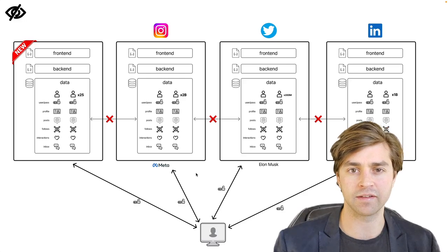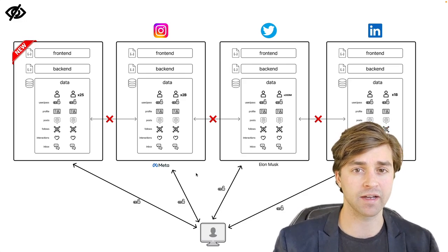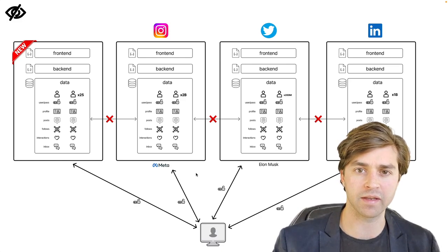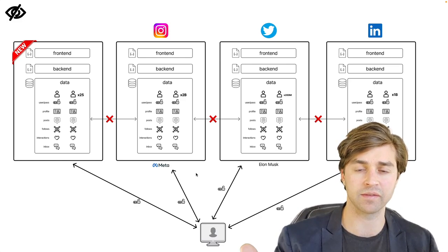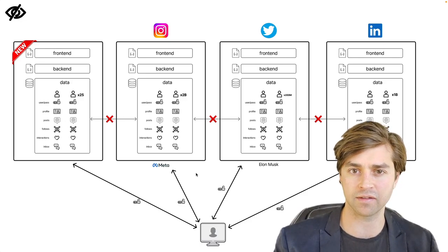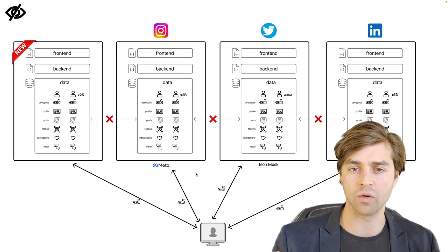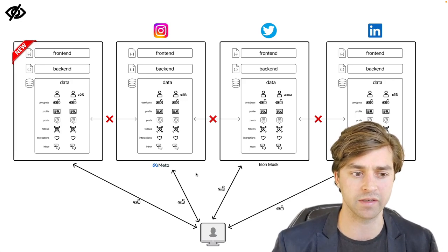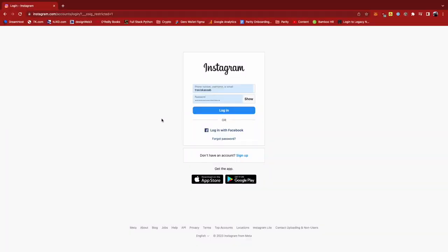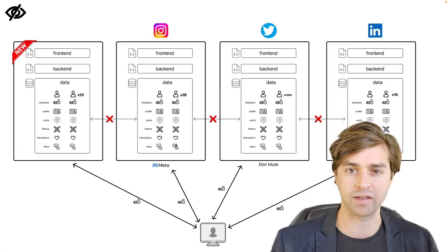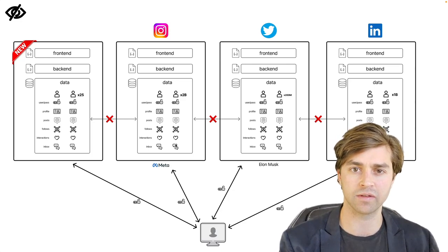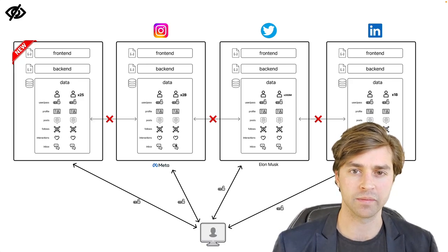The first problem with this is that it's a threat to free speech. At any time, Instagram can revoke my access to the application. Instagram can make it so that I can't access my Instagram account, I can't see all of the data that I've created or actually post on the social network itself, which is an infringement on free speech. This is because this is permissioned access to my account. I must log in with my username and password and Instagram decides whether or not to give me access to my account.